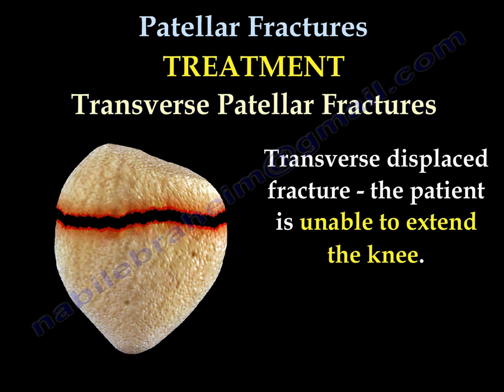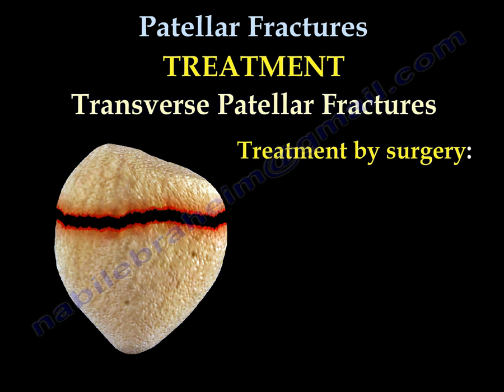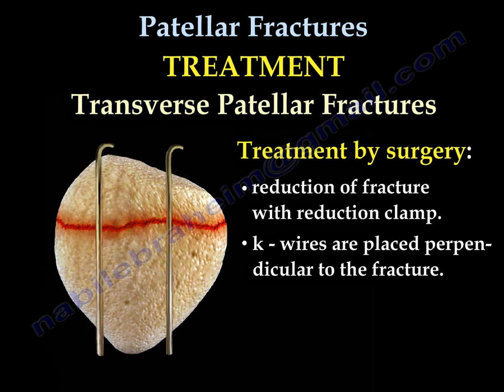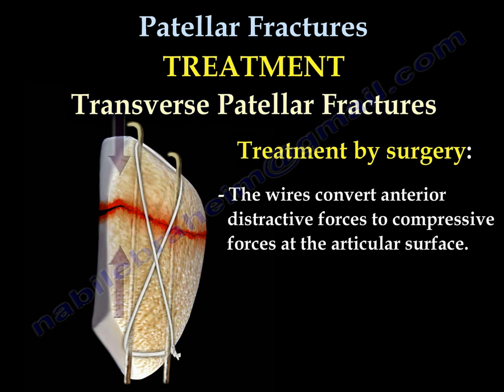Transverse displaced fracture: The patient is unable to do active knee extension. Usually, this displaced fracture is treated by surgery. You can see here reduction of the fracture with a reduction clamp. Wires are placed perpendicular to the fracture. A figure-8 tension band wire is applied for compression of the fracture. These tension band wires convert the anterior distractive forces to compressive forces at the articular surface.